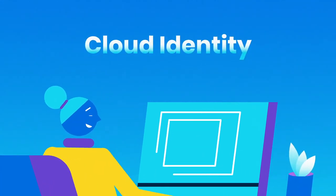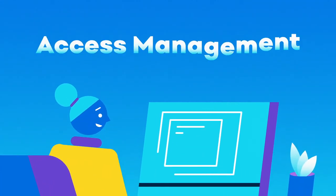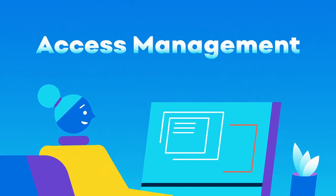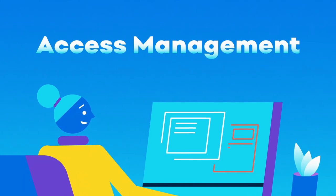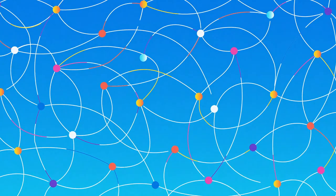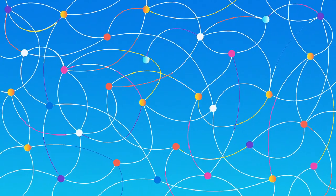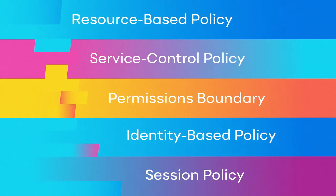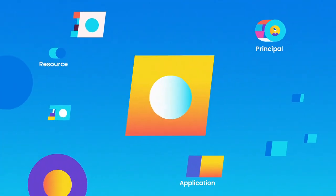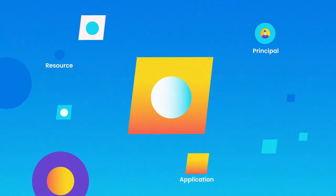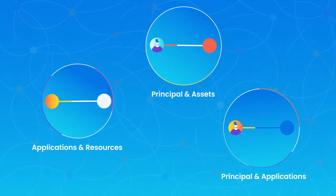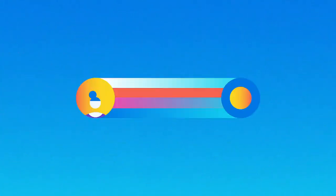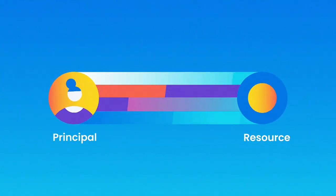When it's your job to govern cloud identity and access management to prevent security incidents and data breaches, it comes with massive complexities. There are many overlapping layers of access and everything has an identity. This means governing at scale becomes a complex, time-consuming challenge with no easy way to analyze access.